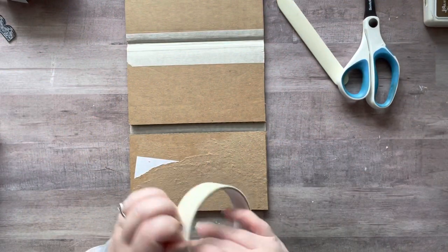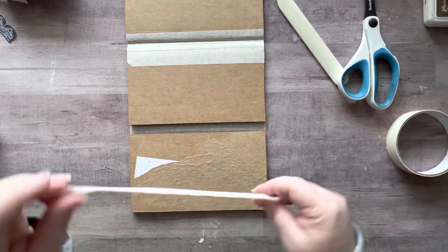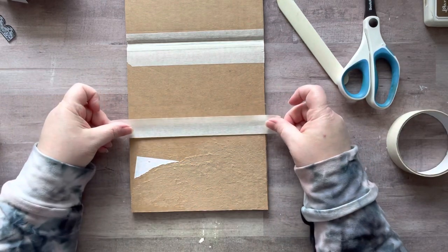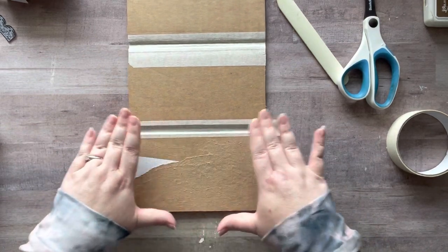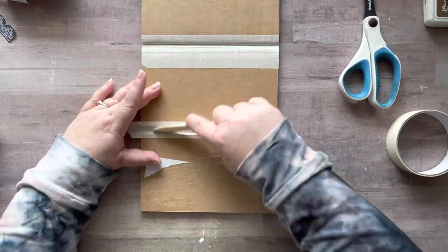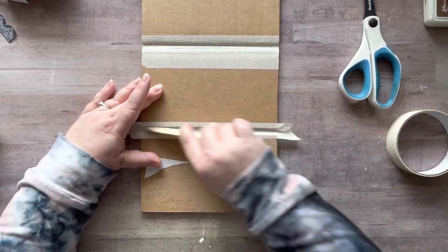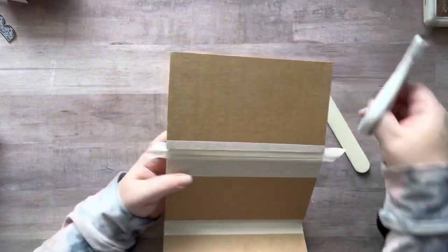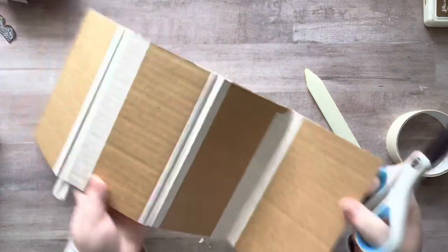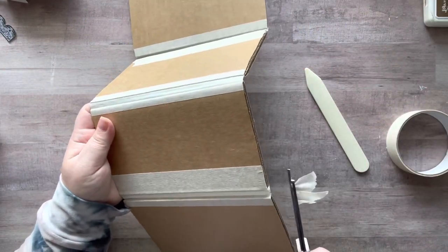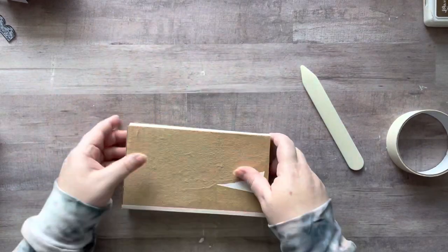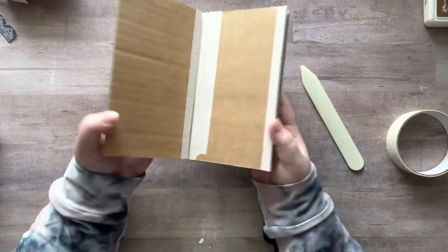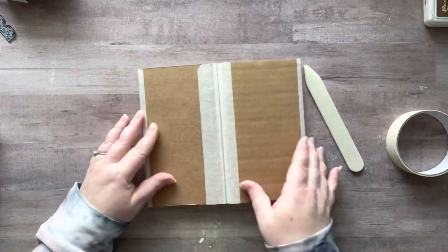Okay, so now we'll take this side. Like I said, I didn't have to do this on my first one because my cardboard wasn't as thick as this. This one looks to be about double the thickness of my last one. Okay, so we got that, and we'll just add some tape over the other side.